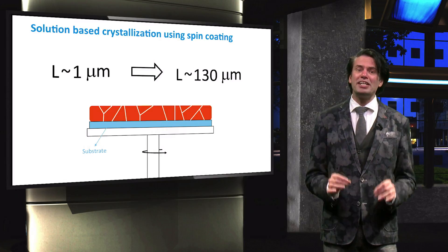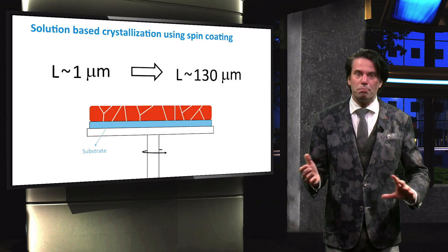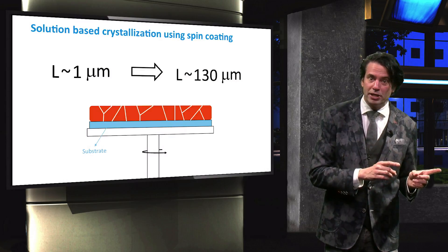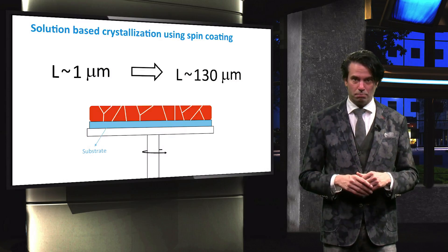By increasing the grain size or decreasing the amount of grain boundary surface, the diffusion length for charge carriers could be increased from 1 µm up to more than 100 µm.